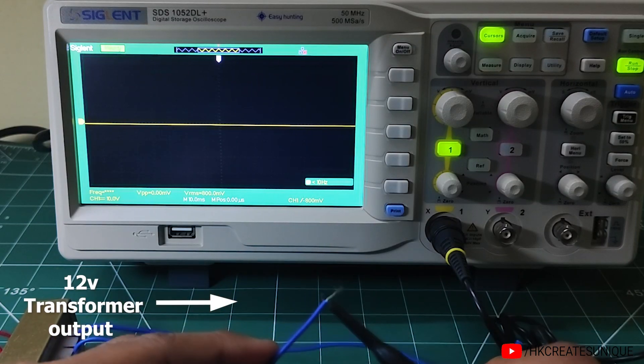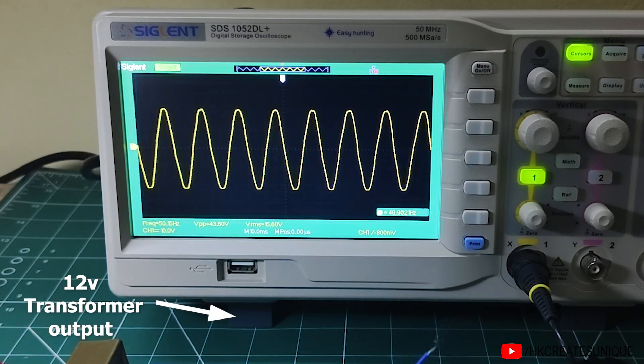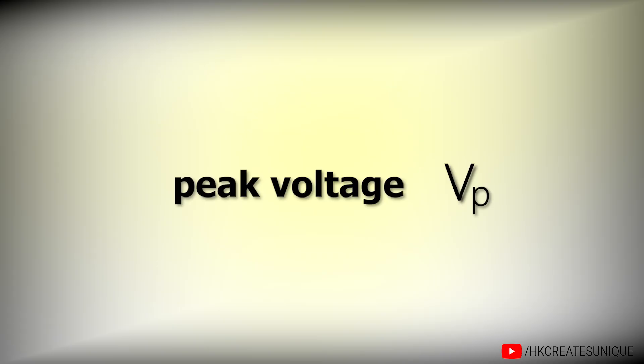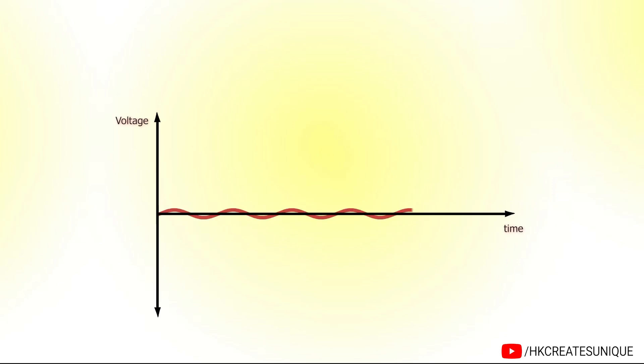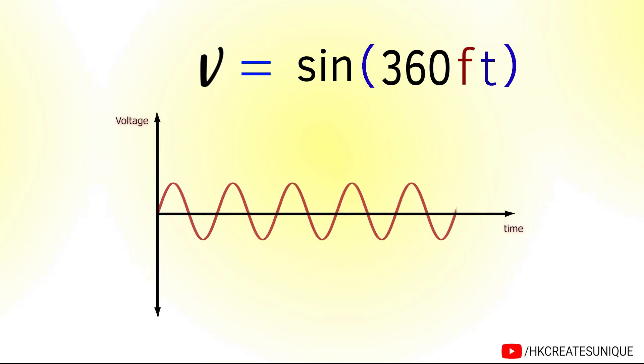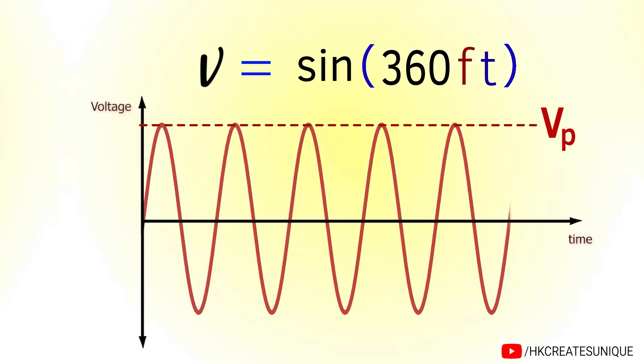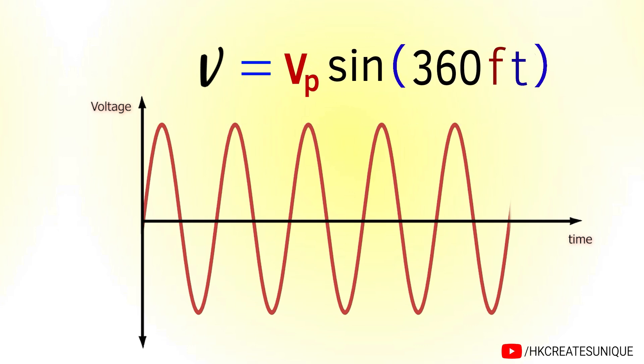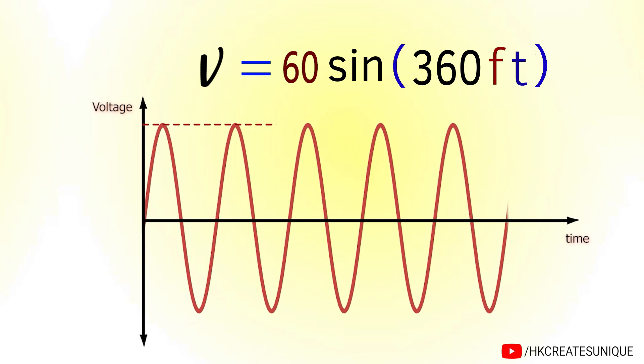The electricity we get at home is sinusoidal alternating current, which has a frequency of 50 Hz in India. And AC voltage represented by instantaneous voltage lowercase v is equal to sin of 360ft has amplitude or peak voltage of 1 volt. So for any peak voltage V subscript p just multiply it by sin of 360ft. For example, 60 sin of 360ft means the maximum value will be 60 volts and the minimum voltage will be minus 60 volts.